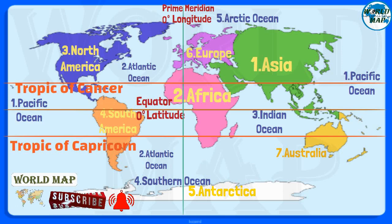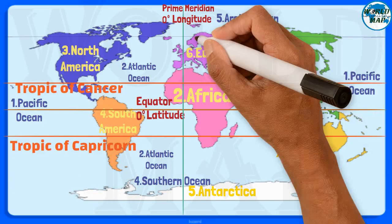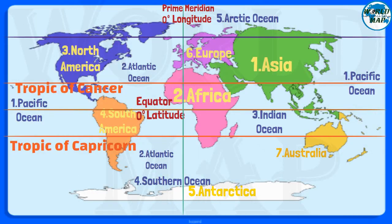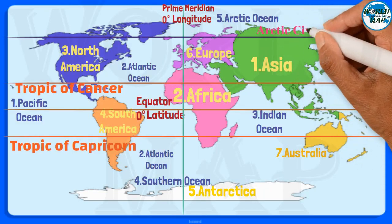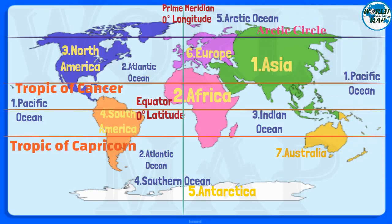Arctic Circle. The Arctic Circle is an imaginary line that encircles the Earth at a latitude of 66 degrees 33 minutes north. It is one of the two polar circles and one of the five major circles of latitude.